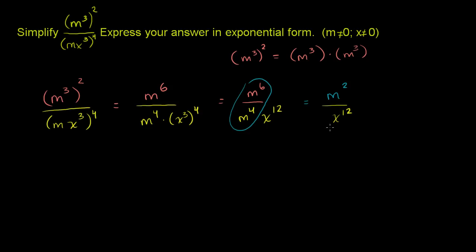If we don't want something in the denominator, we could rewrite this x to the twelfth in the denominator as x to the negative twelfth in the numerator. So we could rewrite this whole expression as being equal to m squared times x to the negative 12. Either of these would be an acceptable answer.